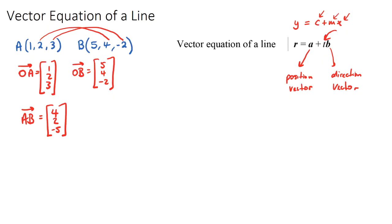Okay, so that's all we need. We need a direction vector, which is this, and we need a position vector, which we can choose either OA or OB.